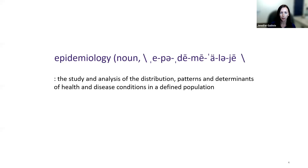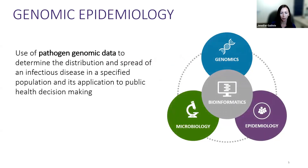Most of you are familiar with epidemiology — the study and analysis of distributions, patterns, and determinants of health and disease conditions in a defined population. There is also a newer field called genomic epidemiology: the use of pathogen genomic data to determine distribution and spread of an infectious disease in a specified population and its application to public health decision making. This involves microbiology, genomics, epidemiology, and at the heart of it is bioinformatics.